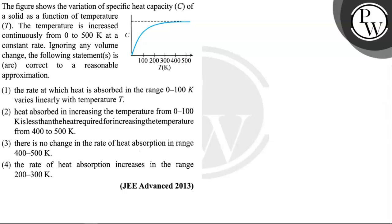Hello. Let's see the question. The question says the figure shows the variation of specific heat capacity of a solid as a function of temperature T. The temperature is increased continuously from 0 to 500 Kelvin at a constant rate, ignoring any volume change.